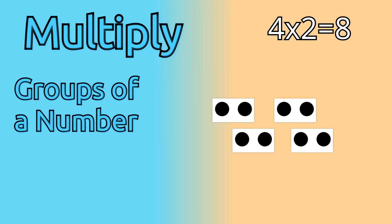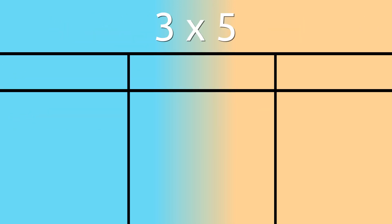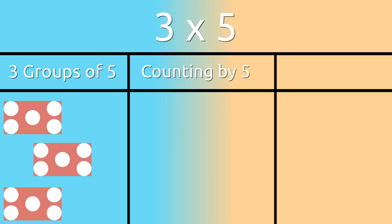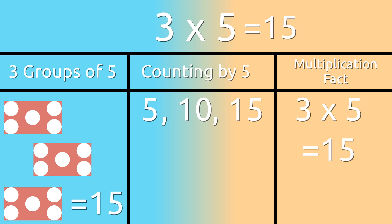When we multiply, we're simply creating groups of a certain number. 3 times 5 is the same as 3 groups of 5, which is the same as counting by 5 three times, adding 5 plus 5 plus 5, or remembering my multiplication fact of 3 times 5, which is 15.